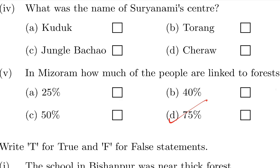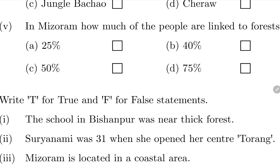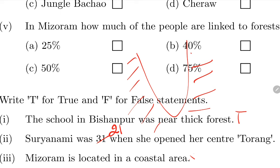True and False section: The school in Bishanpur was near thick forest - absolutely true. Suryamani was 31 when she opened her center Torang - this is wrong, she was 21 when she opened her center. Mizoram is located in a coastal area - no, it's not in a coastal area. The lower part near the sea is called the coastal area, and Mizoram is in the northeastern state.